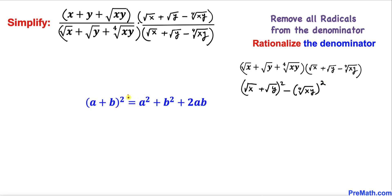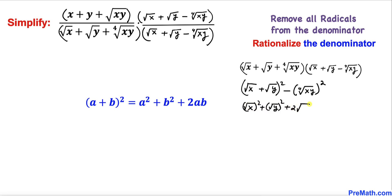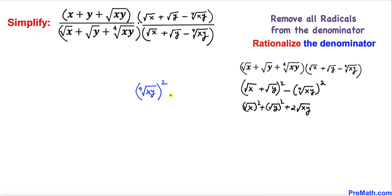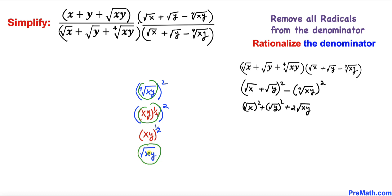Now let's recall the identity a plus b whole squared. Applying it, this becomes square root of x whole squared plus two times square root of x times square root of y plus square root of y whole squared. For the second term, the fourth root of x y is the same as (xy) to the power one-fourth, which simplifies to square root of x y.